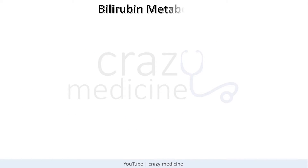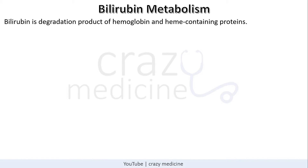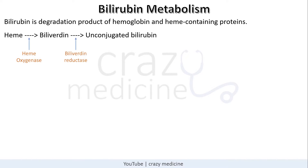First, bilirubin metabolism. Understanding basic bilirubin metabolism is essential for understanding certain concepts. Bilirubin is basically a degradation product of heme and other heme-containing proteins. Heme is converted into biliverdin and then into unconjugated bilirubin with the help of certain enzymes. This unconjugated bilirubin, also called indirect bilirubin, is water insoluble or lipophilic, so it is not circulated freely. For that purpose, it is bound with albumin, forming a bilirubin-albumin complex.